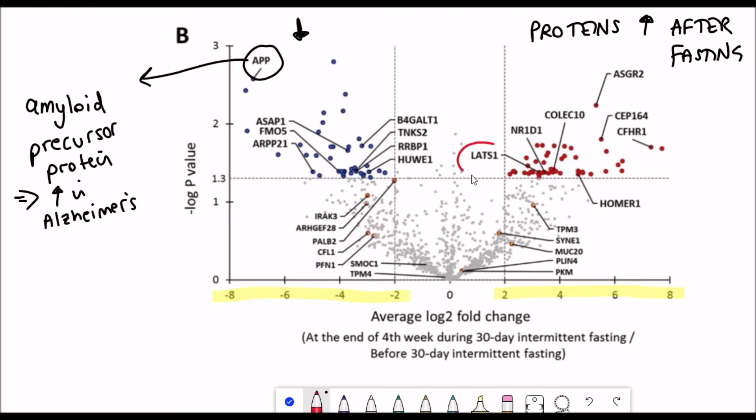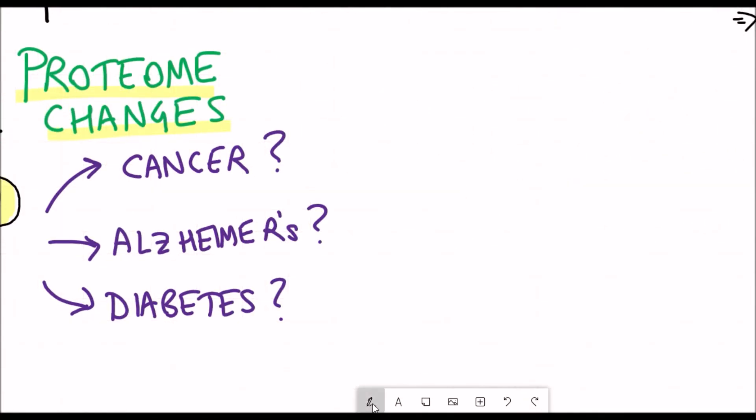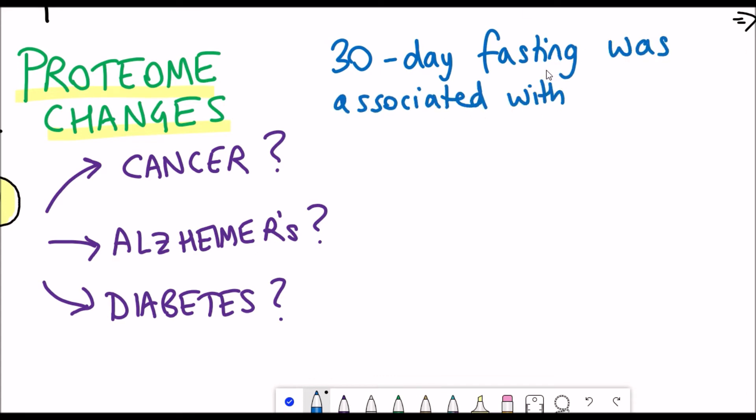Well, technically these are the genes that encode the proteins. The first one I circled was APP, which is the amyloid precursor protein which is associated with Alzheimer's disease, so they saw that go down after the fasting period. Another one I've highlighted is LATS1, which is thought to be an anti-cancer gene. I've also circled NR1D1, which actually encodes one of the circadian clock components which they saw go up during the fasting, and they've also highlighted a protein involved in the insulin response.